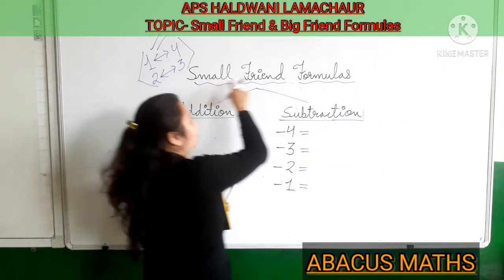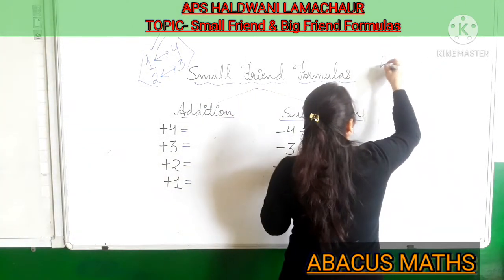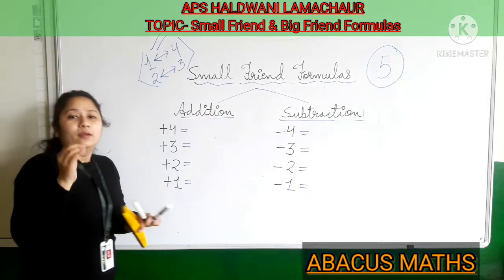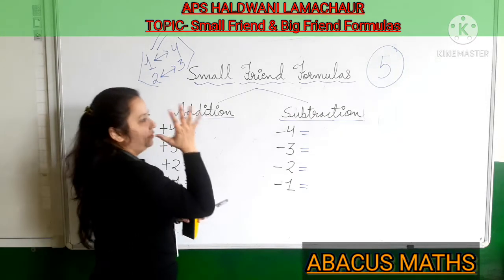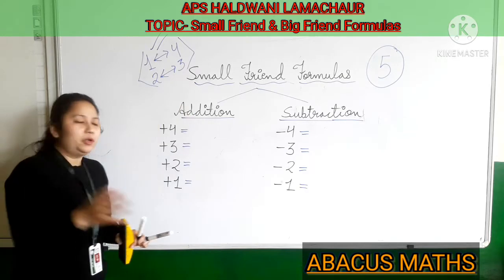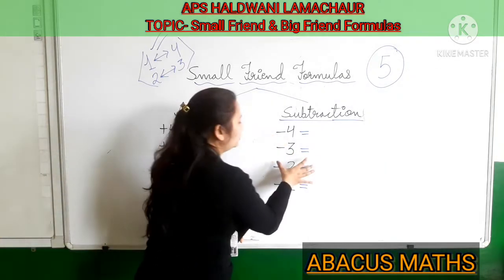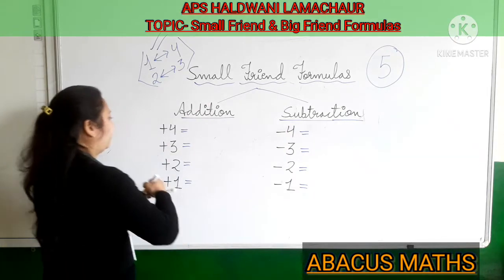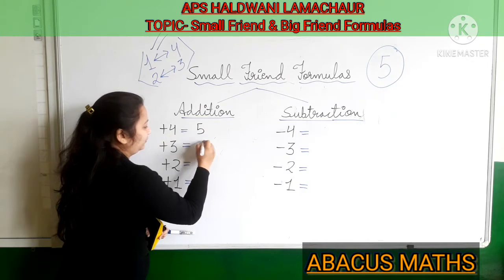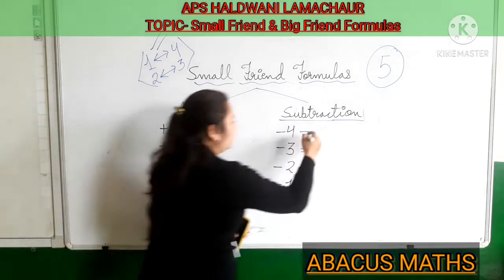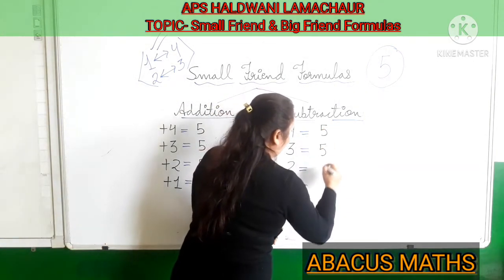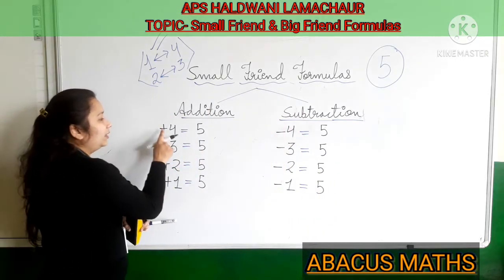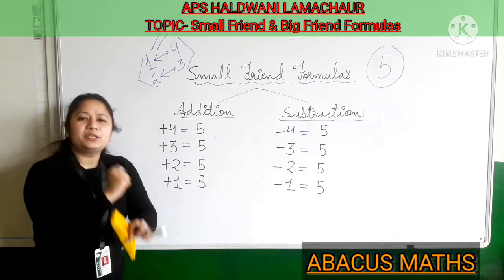In Small Friend formulas the main number is 5. 5 is the best friend of Small Friend formulas. If you want to add any number or subtract any number, the first number is 5. I am creating the formulas — you can create these formulas like this. 5 and the number are best friends.